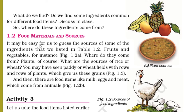It may be easy for us to guess the sources of some of the ingredients that we listed in table 1.2. We can commonly tell about some of the ingredients like oil, spices, and salt — these are common ingredients for some dishes. For example, if you want to prepare vegetable curry, vegetable is a common ingredient. If you are preparing fruit chart, fruits are the common ingredients.